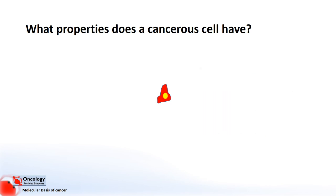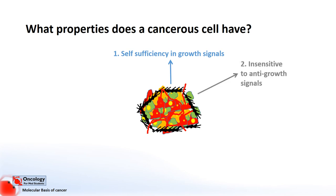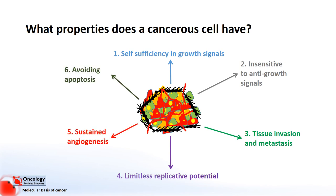The six hallmarks that they suggested all cancers share in common were as follows: self-sufficiency in growth signals, insensitivity to anti-growth signals, tissue invasion and metastasis, limitless replicative potential, sustained angiogenesis, and avoiding apoptosis. I'll briefly go over each of these hallmarks to give you a clear idea of what we mean by each of these properties.